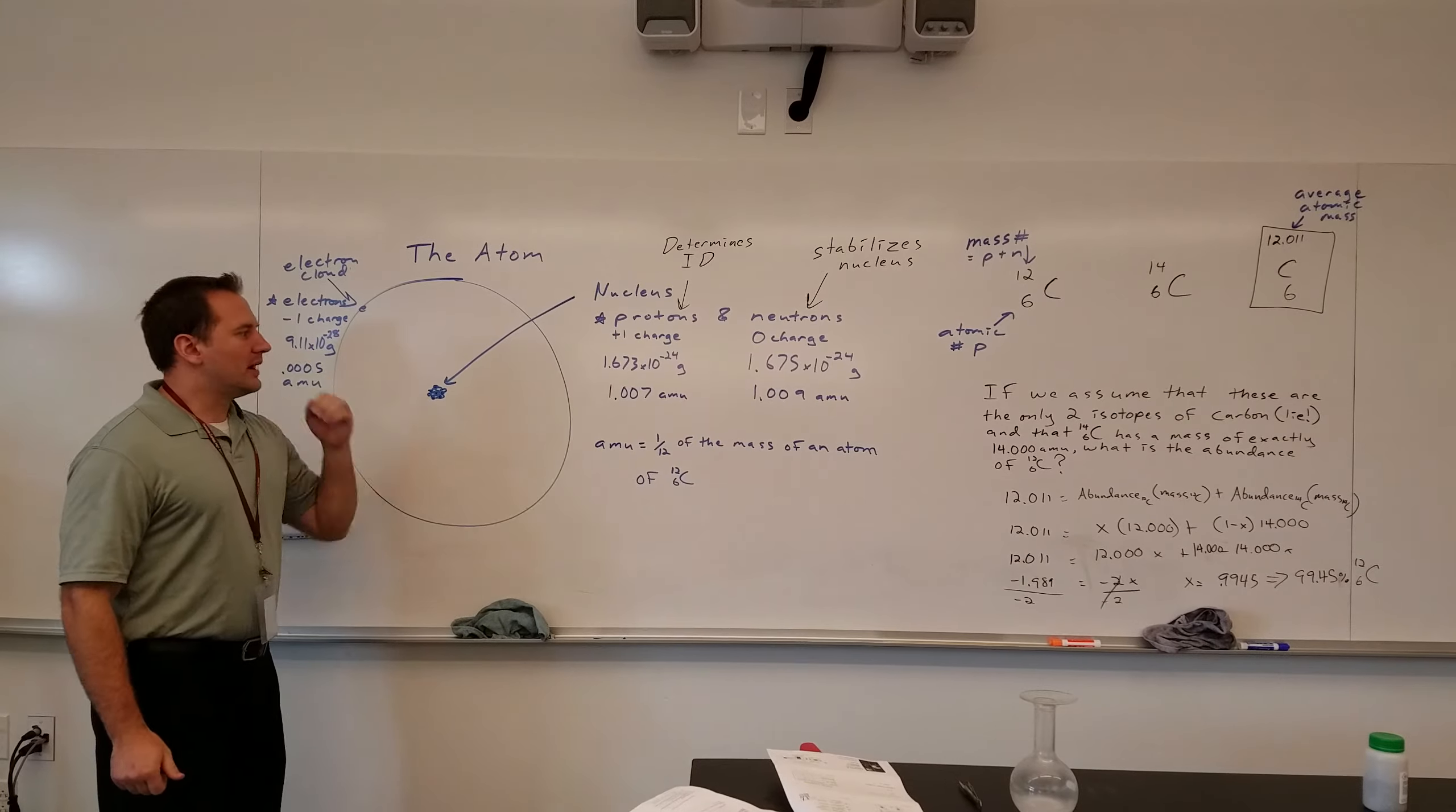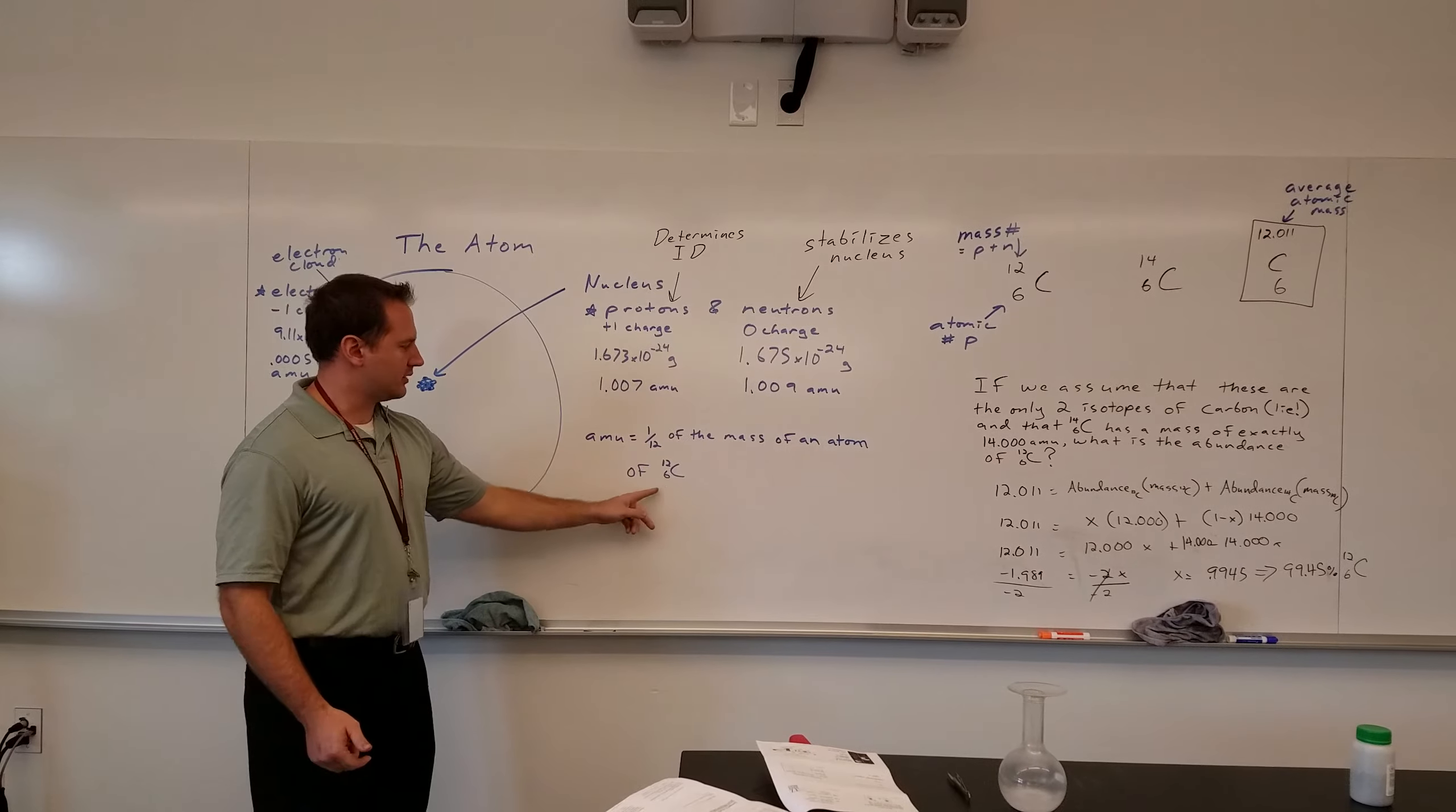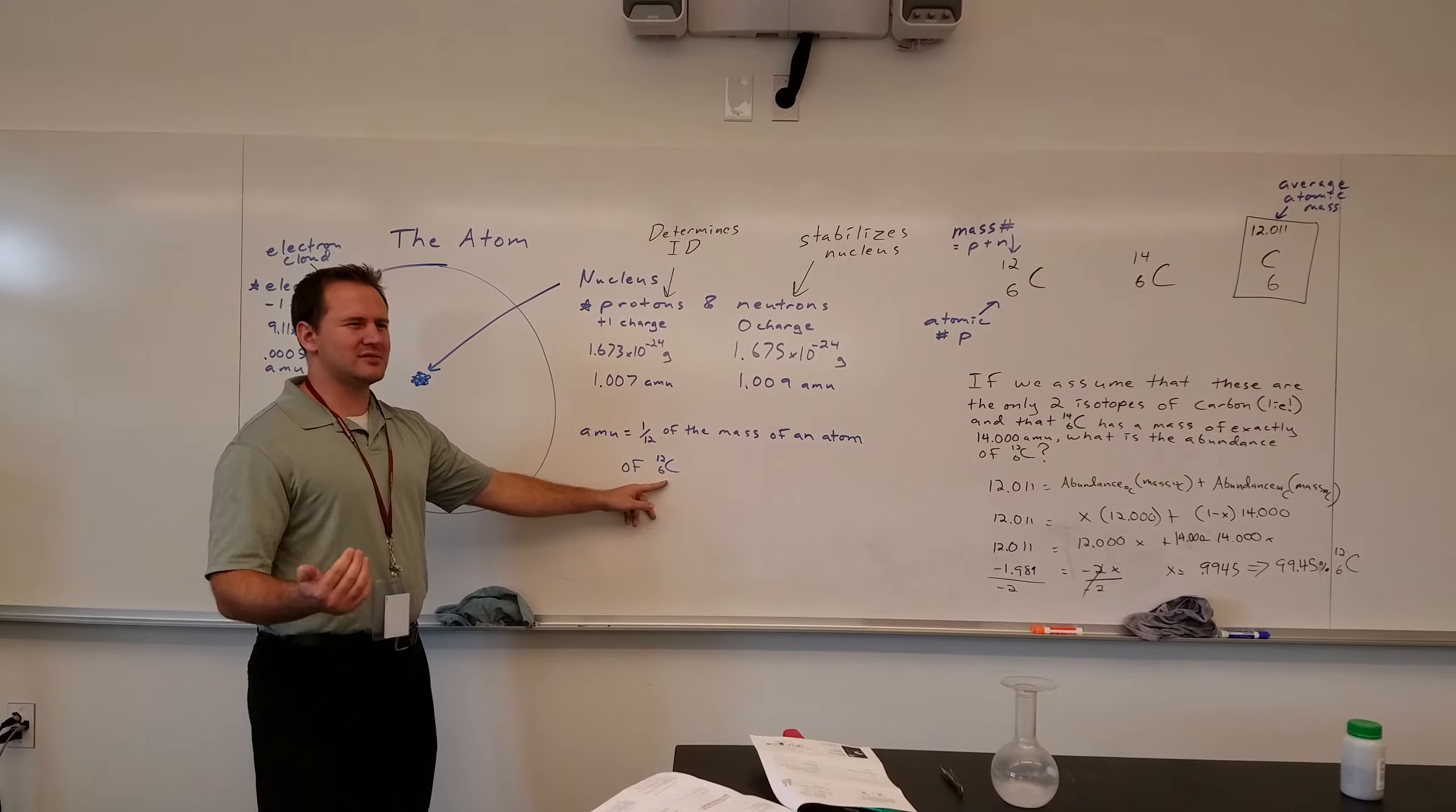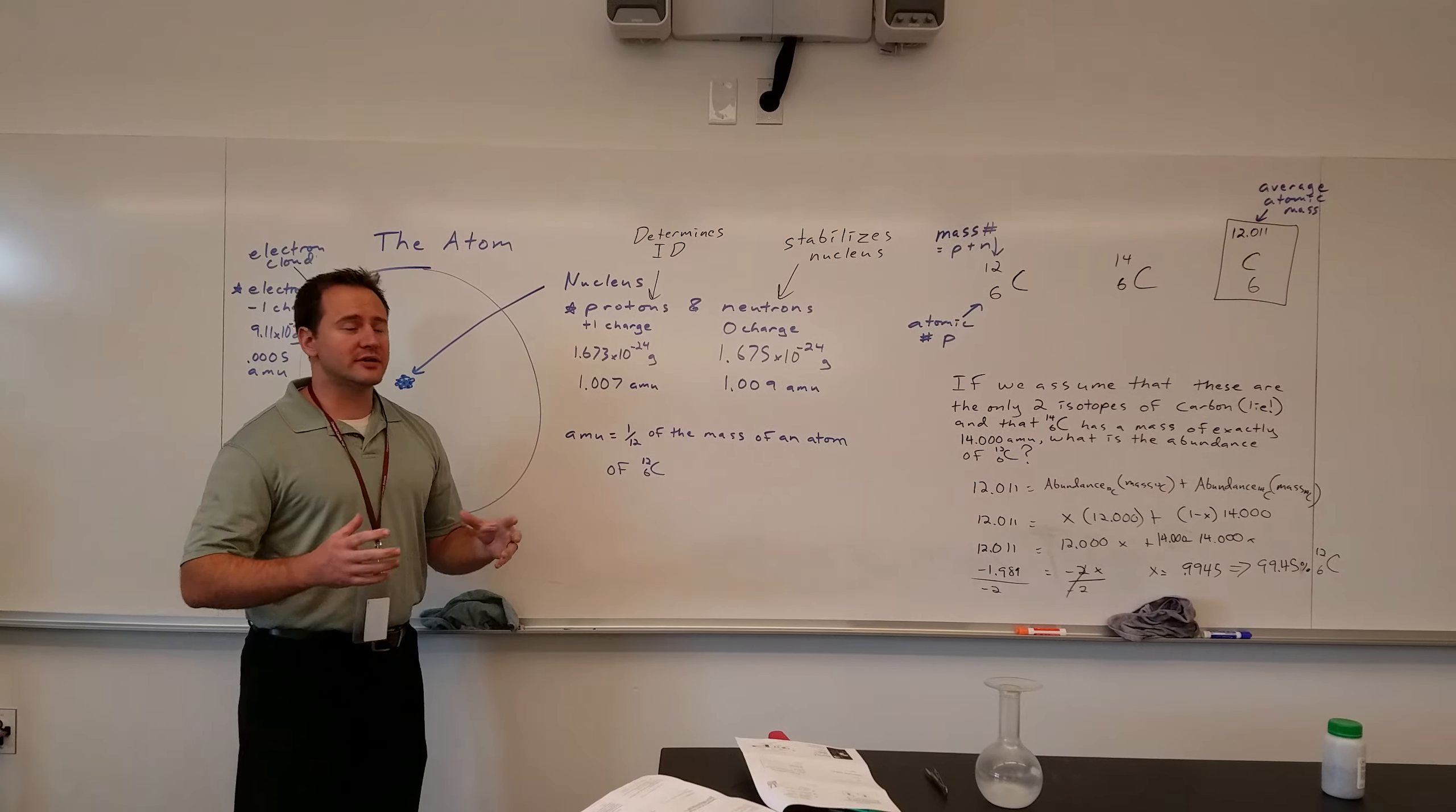So, an atomic mass unit is defined as one twelfth of the mass of an atom. So, you might think to yourself, I mean, mass of a carbon atom, carbon twelfth atom. So, this means it has six protons and six neutrons. So, if its mass is exactly 12.00, how can it be made up of 12 things that have a mass slightly greater than one? And the answer to that is, in the formation of a nucleus, some of that matter, some of this mass, actually gets converted to energy.